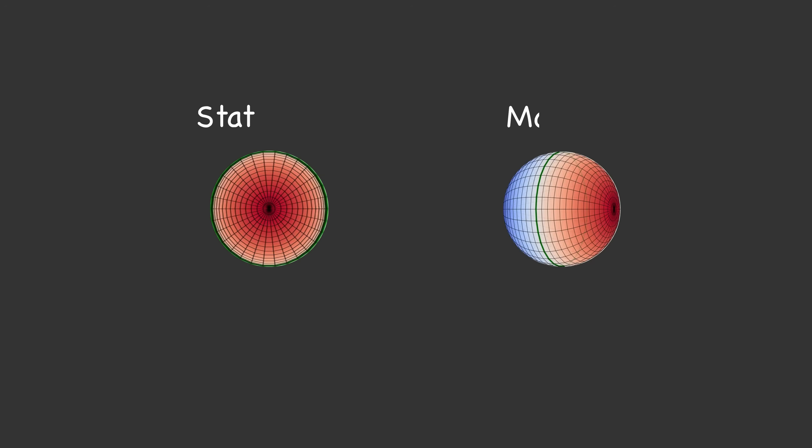However, this is only true for one-dimensional objects. If you are in three dimensions, Terrell and Penrose showed that you wouldn't see a contraction. The object would appear the same size but rotated.